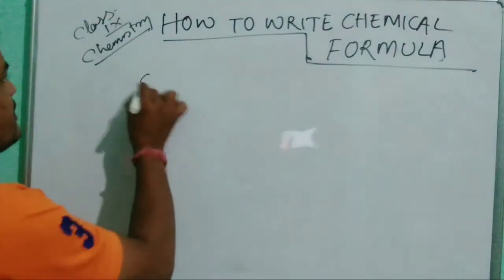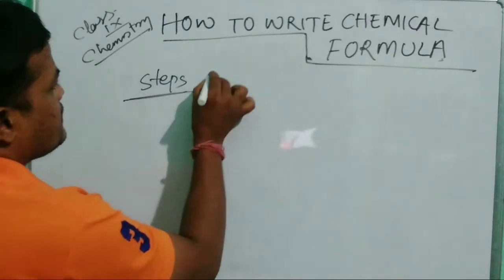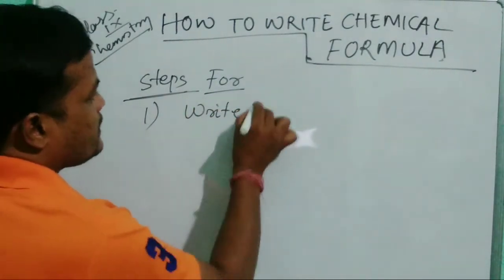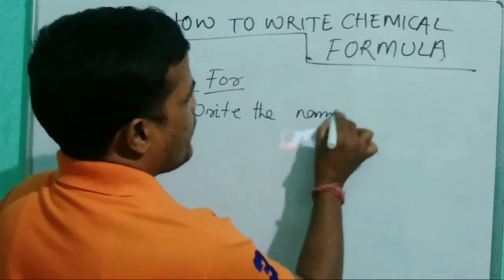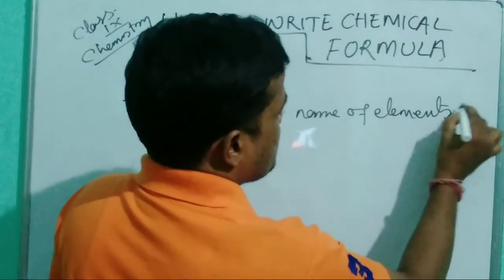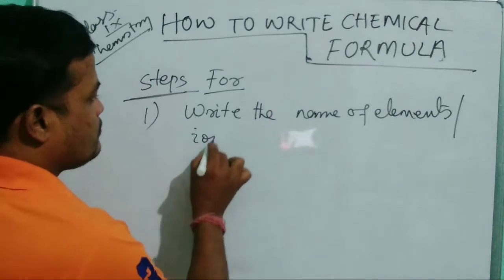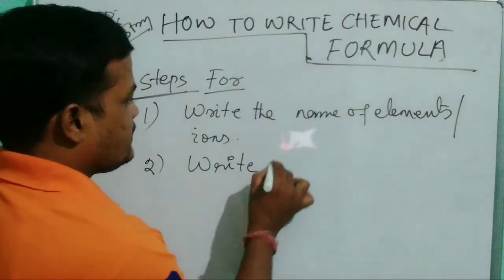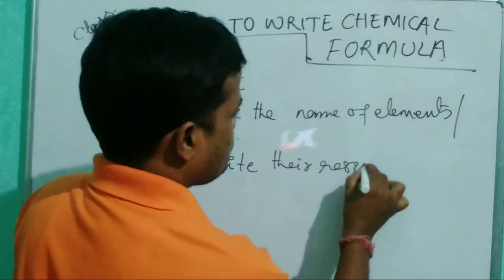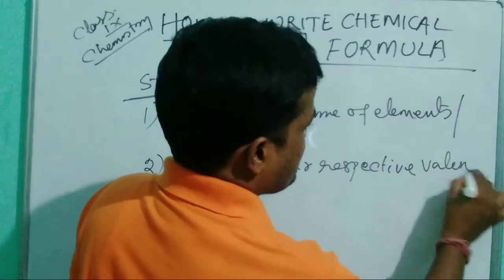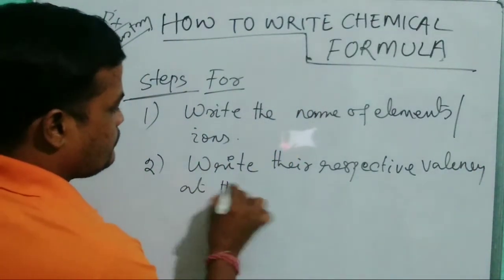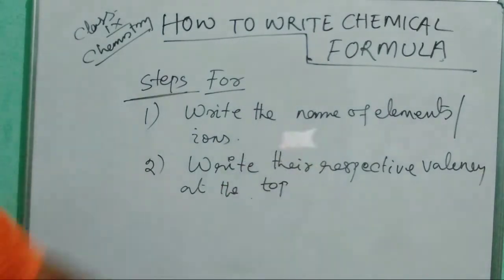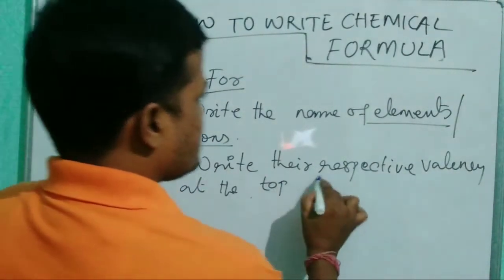Steps for writing a chemical formula. Step number one: write the name of the elements or ions. Step number two: write their respective valency at the top.